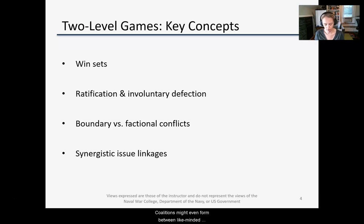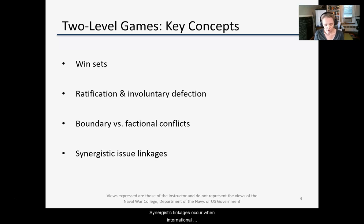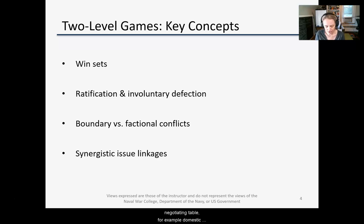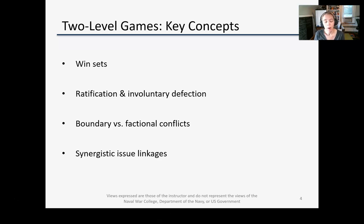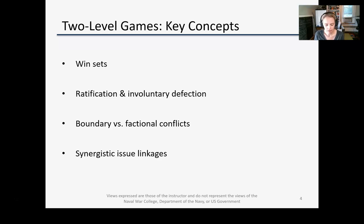Coalitions might even form between like-minded constituencies in different states. Synergistic linkages occur when international negotiations actually create options at the domestic negotiating table. For example, domestic constituencies may be willing to accept environmental or safety regulations in return for job creation, but jobs can only be created through international trade negotiations that open export markets.